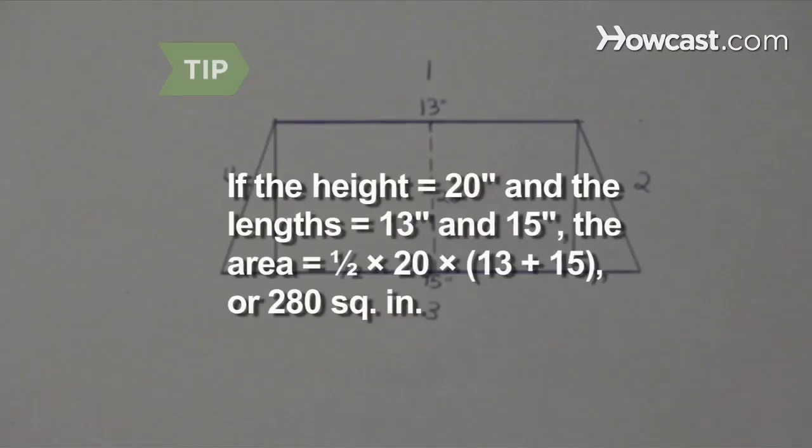For example, if the height of a trapezoid is 20 inches and two parallel sides of the trapezoid measure 13 and 15 inches, the area is given by ½ times 20 times 13 plus 15, or 280 square inches.